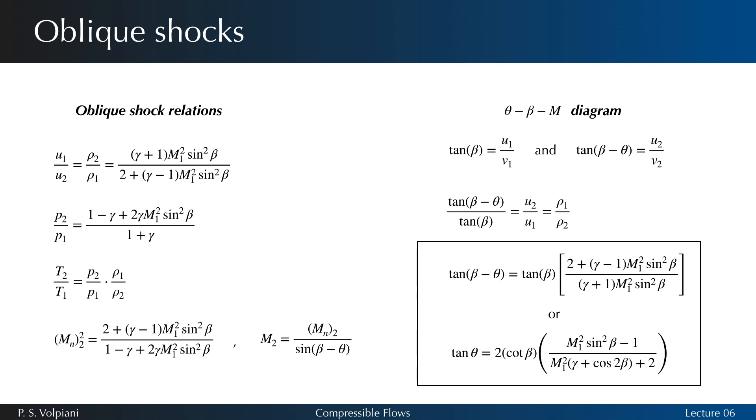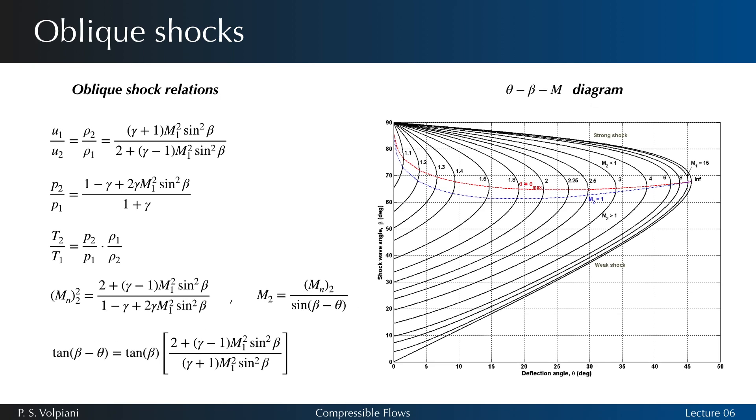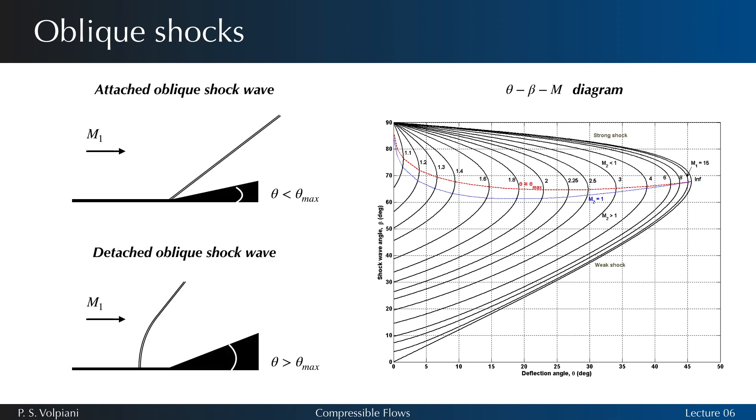The last equation relates theta, beta and the Mach number and is very useful when studying oblique shocks. It is also possible to plot a diagram between theta, beta and the Mach number. This diagram shows that there is a maximum corner angle theta max for any upstream Mach number. When theta is greater than theta max, the oblique shock wave is no longer attached to the corner and is replaced by a detached bow shock.